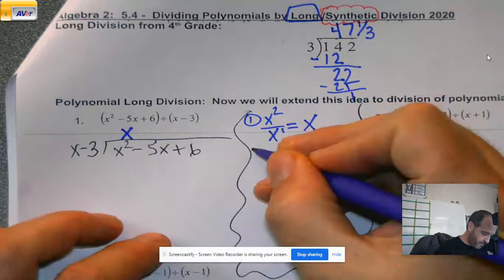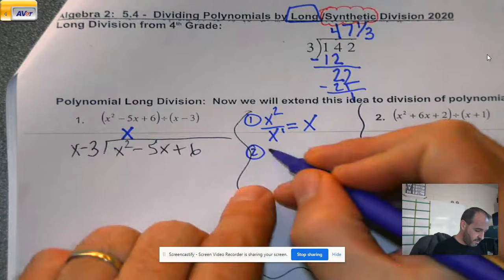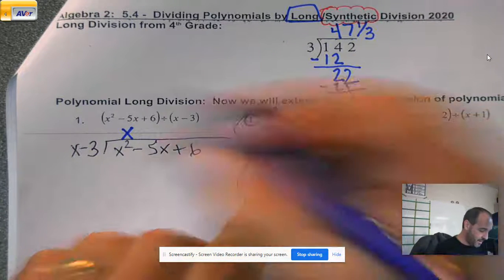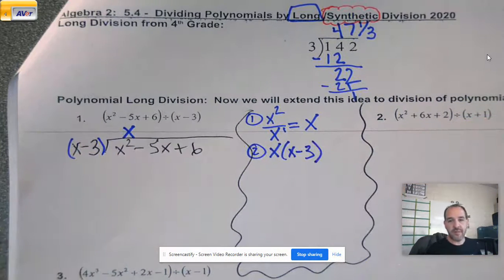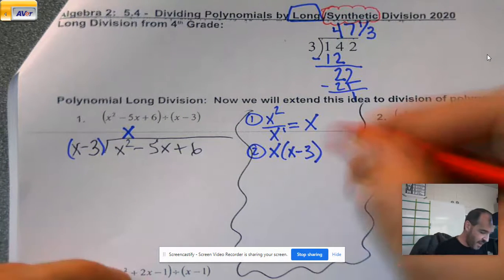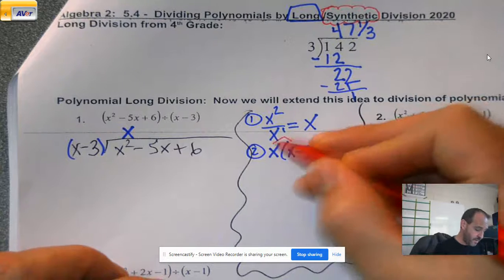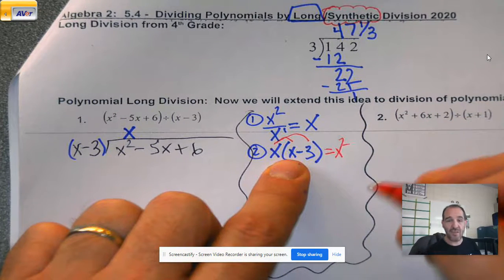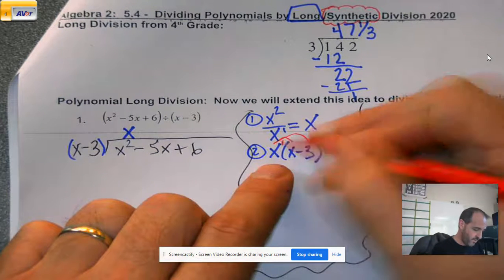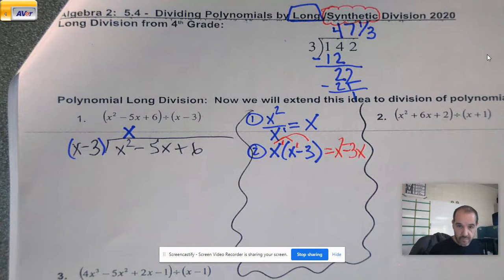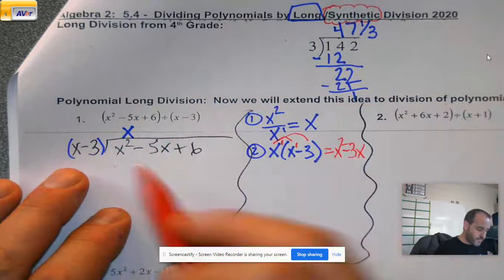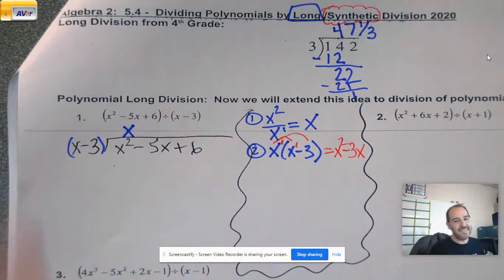So first term divided by first term. Yep, we got to go back and do exponent rules. Subtract. 2 minus 1 is x. That goes up here. So actually, it's the same thing that you did originally. First into first. Second step. Take that answer that you just got and multiply it times your divisor. This is why we show all this stuff here. So when we go back to look at it later, we can see where the different pieces came into play. And then distribute that out. So x times x is x squared. Again, not 2x. We're adding exponents. And x times negative 3 is negative 3x. So where's that going to go? That's going to go below here.